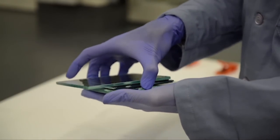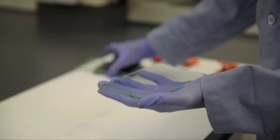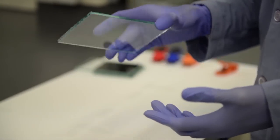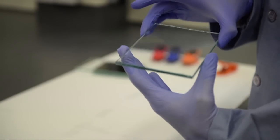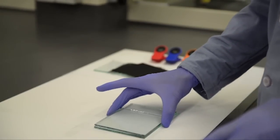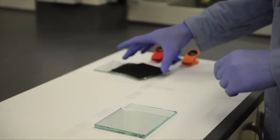First, we are going to use a model to demonstrate the fabrication of the solar cell. We start by placing an FTO glass with the conductive side facing up. Next, we deposit a layer of titania covering three-fourths of the surface.